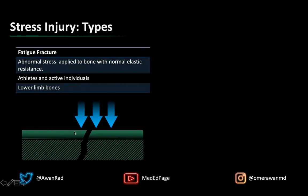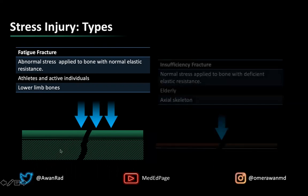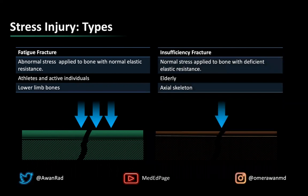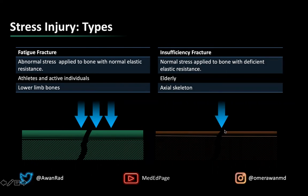Notice here the bone cortex is nice and thick and the trabeculae are normal. Contrast that to an insufficiency fracture — normal stress, like walking instead of running, applied to bone that's osteoporotic with low mineral density and low bone mass — deficient elastic resistance. Notice here the cortex is thinner and the trabeculae are not as robust. We have a frank fracture in an osteoporotic individual. That's the difference between an insufficiency fracture and a fatigue fracture.